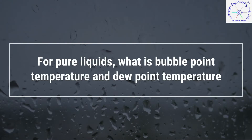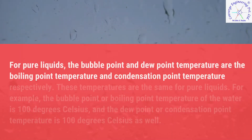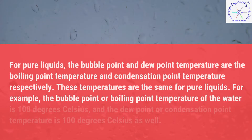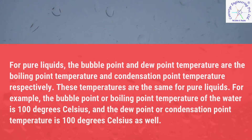For pure liquids, what is bubble point temperature and dew point temperature? For pure liquids, the bubble point and dew point temperatures are the boiling point temperature and condensation point temperature respectively. These temperatures are the same for pure liquids. For example, the bubble point or boiling point temperature of water is 100 degrees Celsius, and the dew point or condensation point temperature is also 100 degrees Celsius.